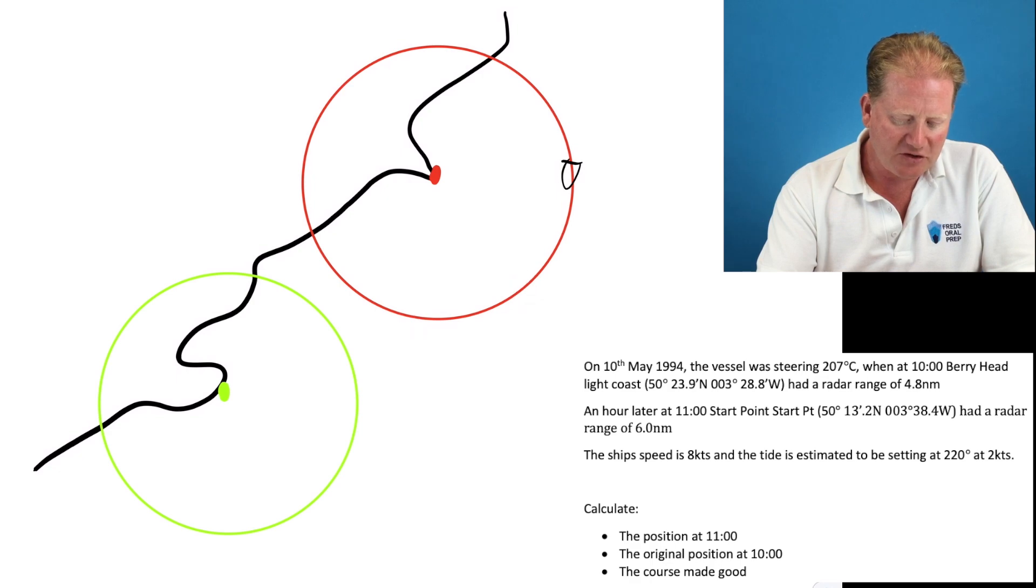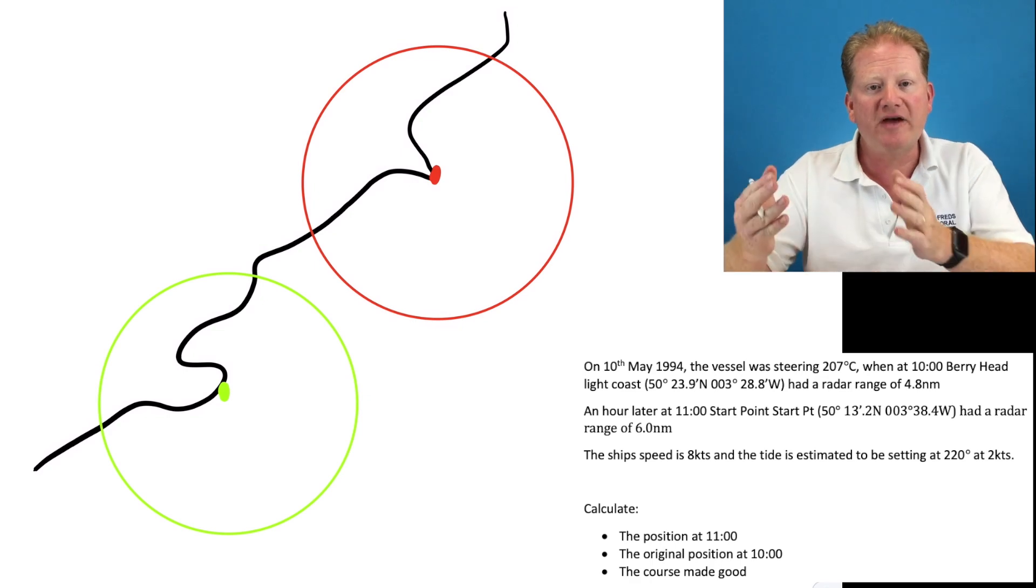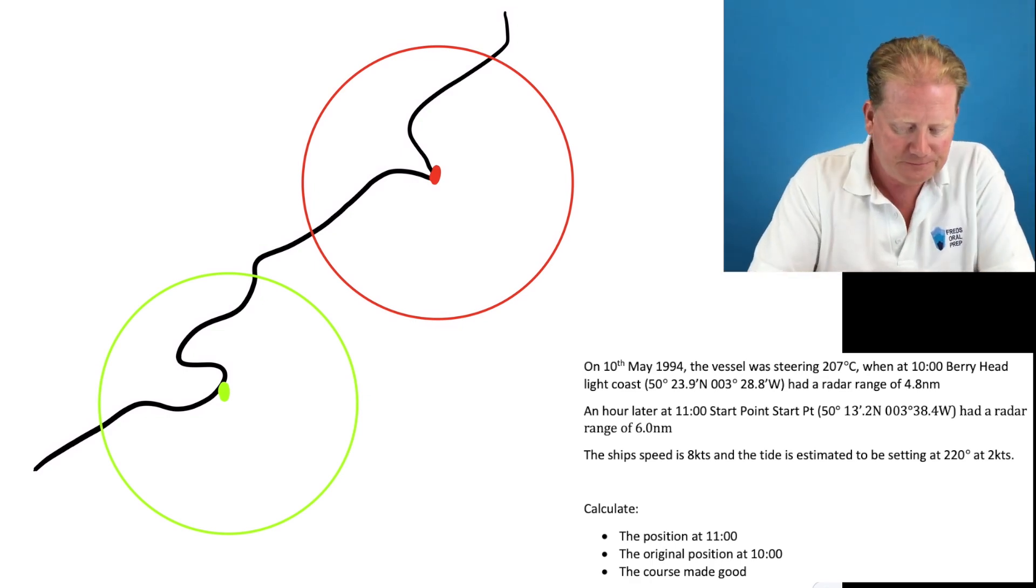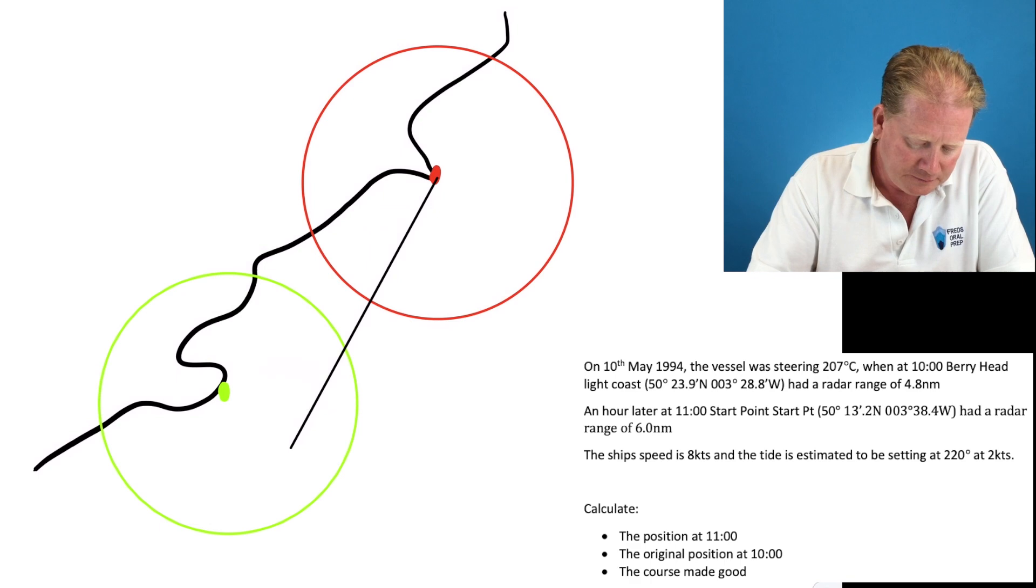So we are going to cheat. We're going to assume we're at the center of the radar range and then we're going to move everything down by one radar range worth. So we'll say that we are steering about 207 degrees there. And that equates to our course and our speed. And then we have a bit of tide.